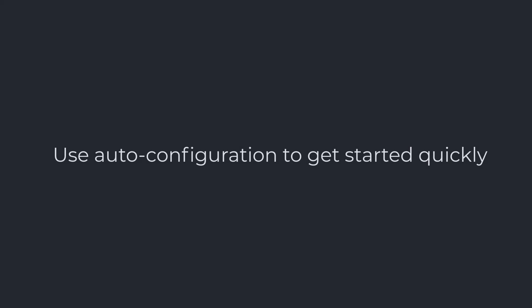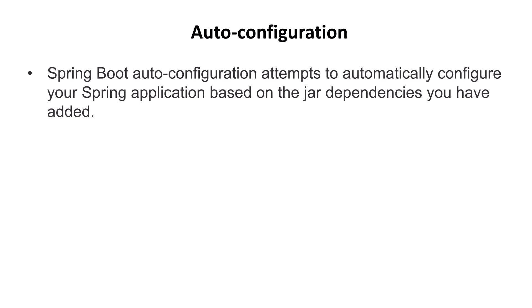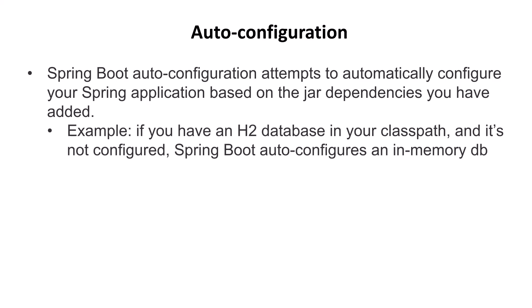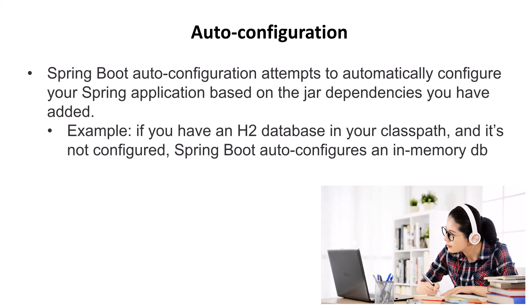Next up, number seven: use auto-configuration to get started quickly. The auto-configuration feature in Spring Boot attempts to configure your Spring application automatically based on your dependencies. For example, if you have an H2 database specified in your classpath and it's not yet configured, Spring Boot will auto-configure an in-memory database for you and connect you to the database using the SA account by default with no password. Certainly this isn't secure, but it gets you up and running right away.